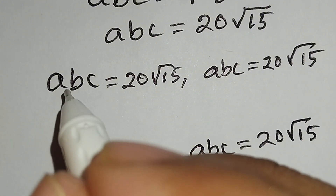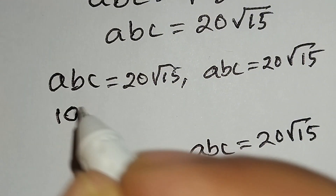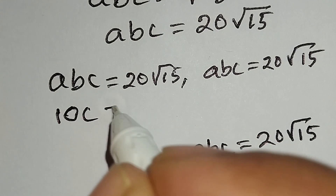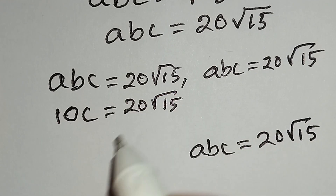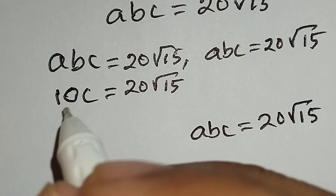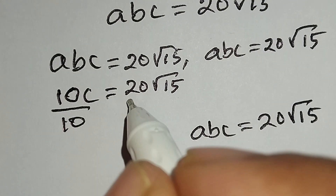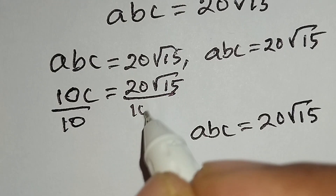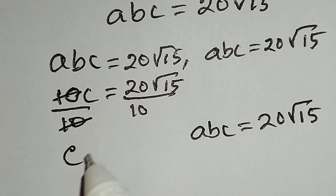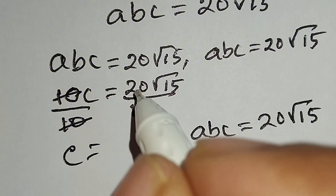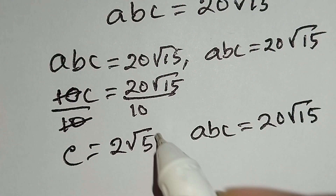From equation number one we know AB equals 10, so we can substitute: 10 times c equals 20√15. Dividing both sides by 10, the 10s cancel out, and c is equal to 2√15.